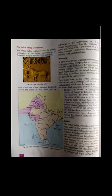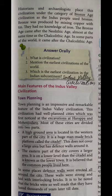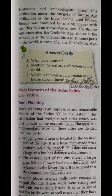Historians and archaeologists came to know that the main element used here is associated with the Bronze Age. It is called the Bronze Age because people started using bronze material. Bronze was produced by mixing copper and tin, and they had no knowledge of iron at that time. The Bronze Age came after the Neolithic Age.